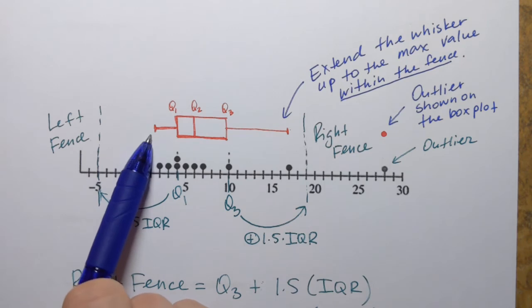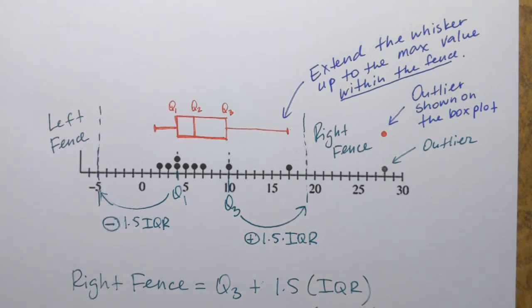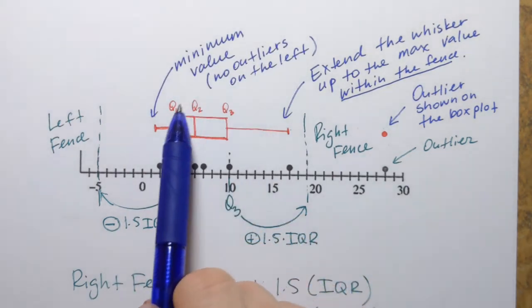And now on the left hand side, we extended the whisker to the minimum value for the data set. Well, because there are no outliers on the left for this data set. So that is the minimum value. Minimum value, no outliers on the left.